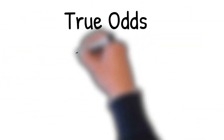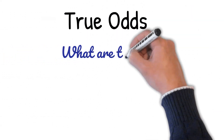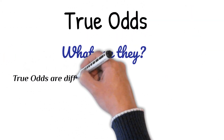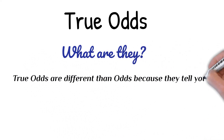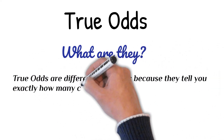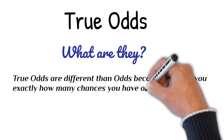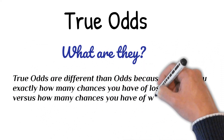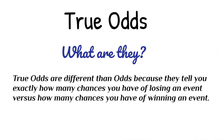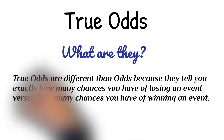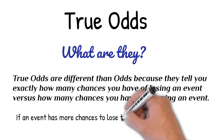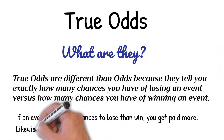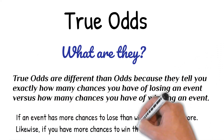True odds — what are they? True odds are different than odds because they tell you exactly how many chances you have of losing an event versus how many chances you have of winning an event. If an event has more chances to lose than win, you get paid more. Likewise, if you have more chances to win than lose, you get paid less.